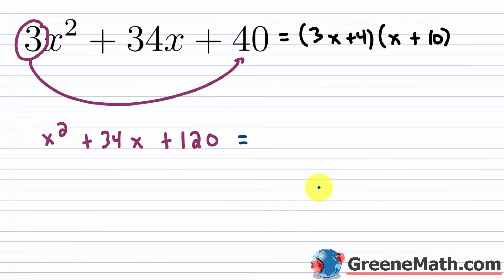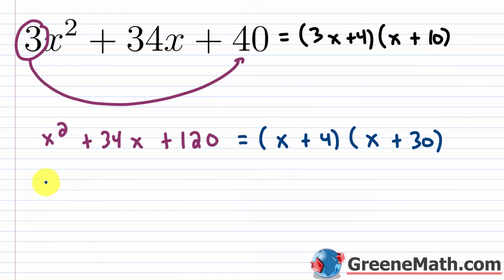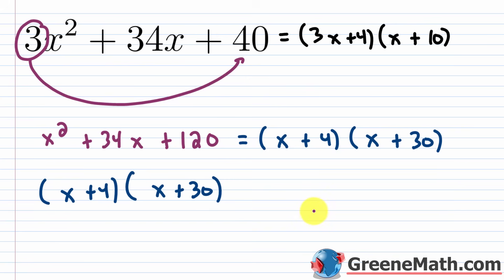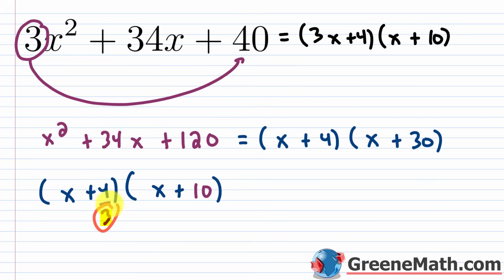We already know the two integers whose sum is 34 and product is 120: they're 4 and 30. So we factor as (x + 4)(x + 30). Now divide each constant in the factors by the original a value, 3: 30 ÷ 3 = 10, so that factor becomes (x + 10). For 4/3, the denominator doesn't simplify to 1, so slide the denominator 3 out front, giving (3x + 4).